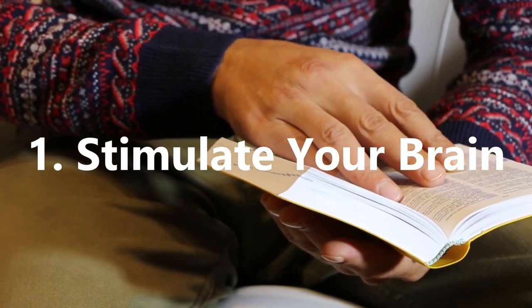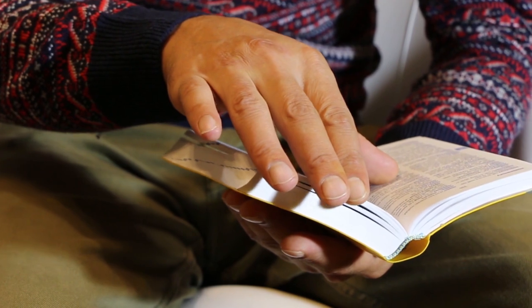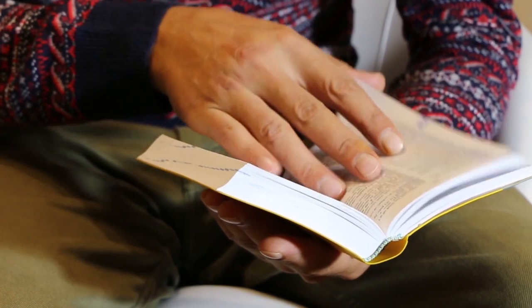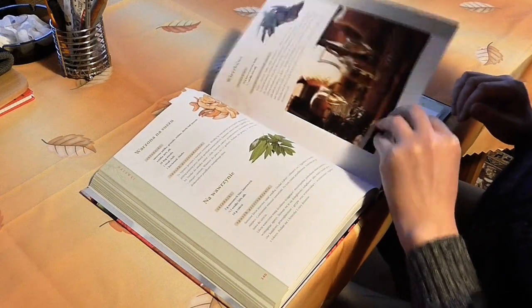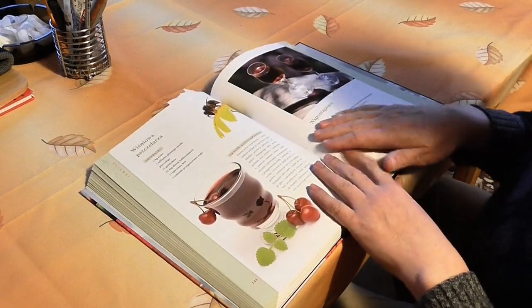Stimulate Your Brain. Imagine the brain is like a muscle. When you exercise a muscle it stays stronger and healthier, which over the course of your life means you're likely to feel stronger as you age.